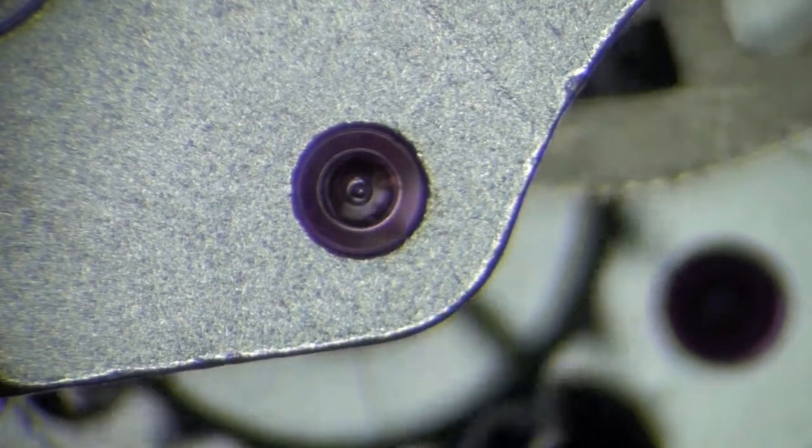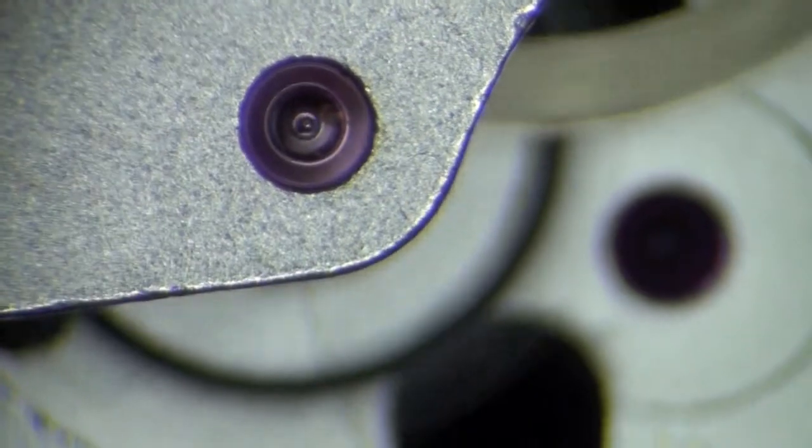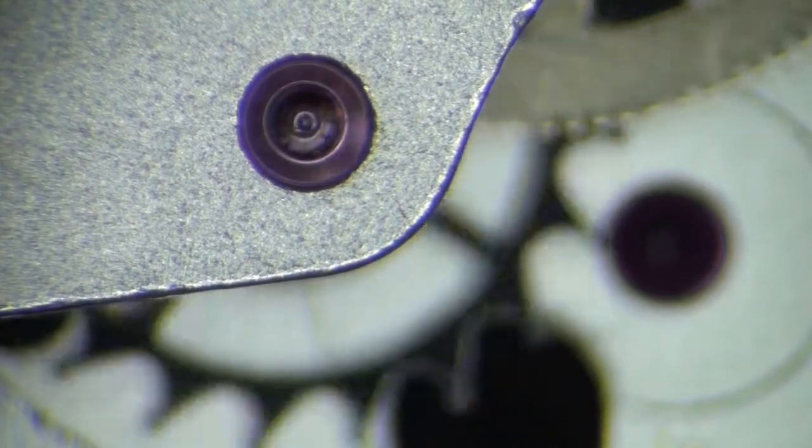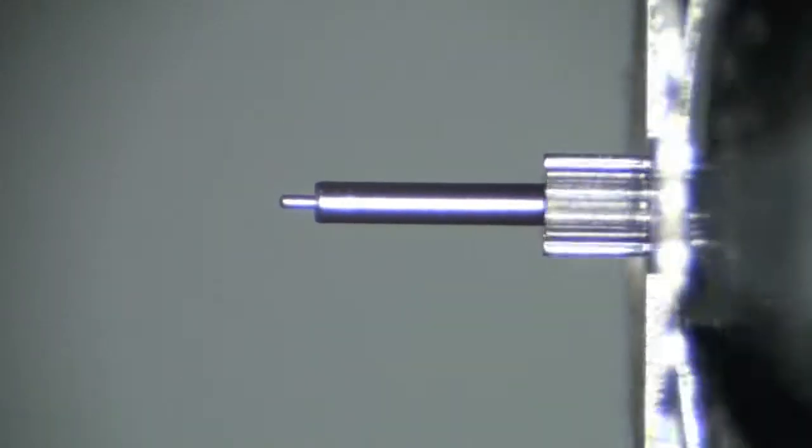During disassembly of the movement, the gear train is function checked for smoothness of operation and the straightness of wheels. This bent pivot is causing a large disruption to the power flow.